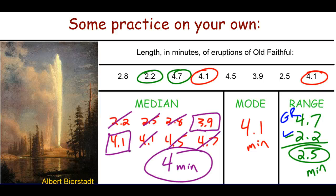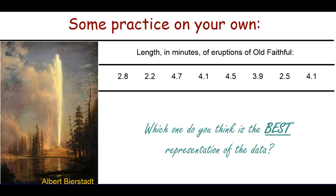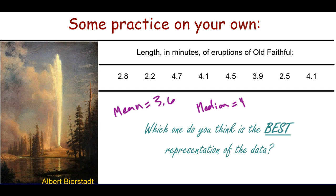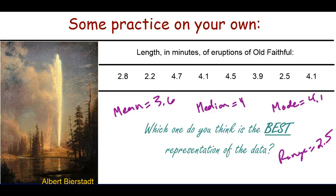The last question: which do you think is the best representation of this data? The mean was 3.6, the median was 4, the mode was 4.1, and the range was 2.5. If you had to choose exactly one of these to best represent the data, which would you use and why?